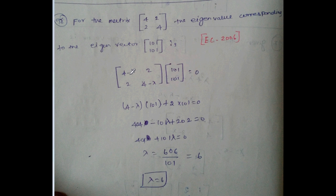Then simplify, then find out lambda. Lambda equal to 606 divided by 101 equal to 6. So answer is 6.